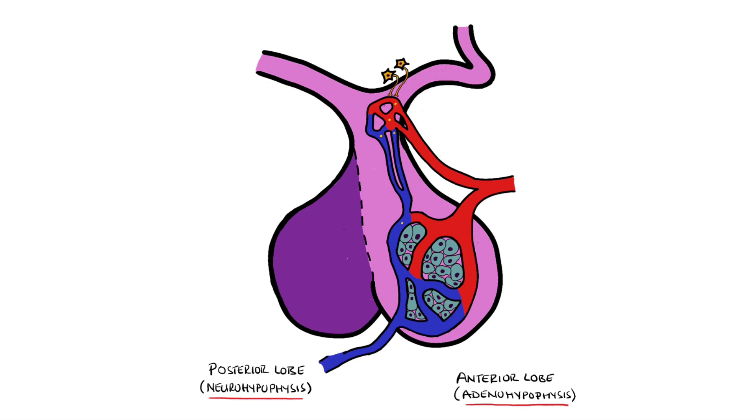The hormones of the anterior pituitary can be remembered by the mnemonic FLAT PEG. F stands for follicle-stimulating hormone, which stimulates oocyte development and estrogen secretion in females, while stimulating development of spermatocytes in males.